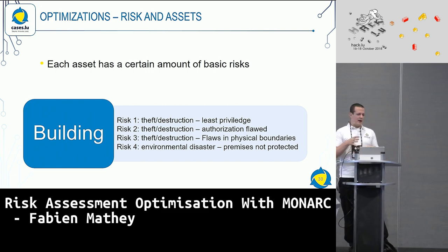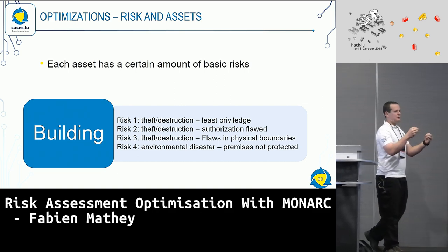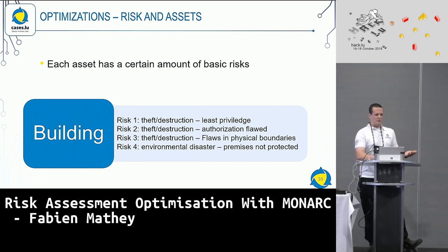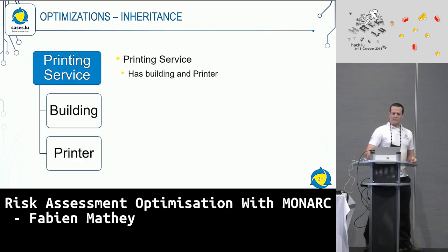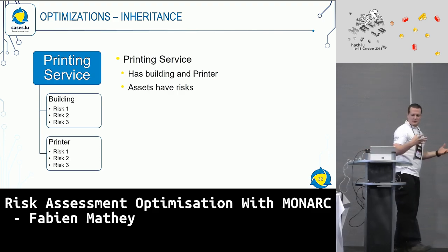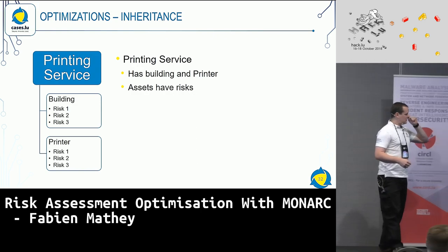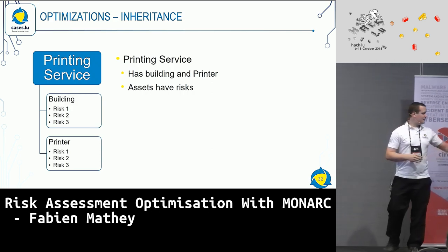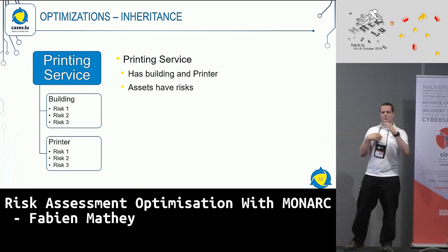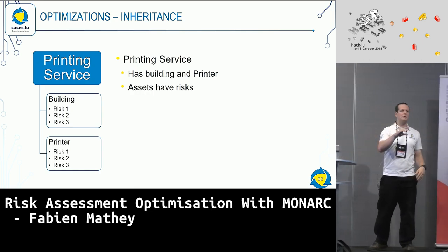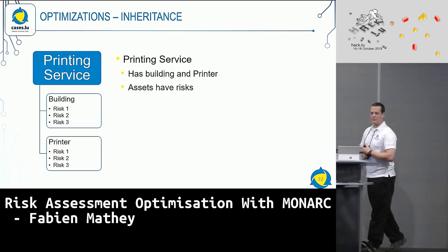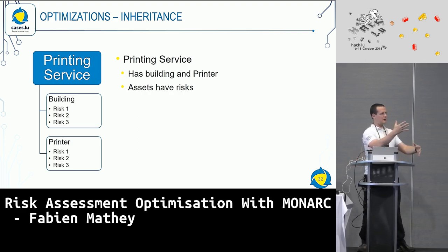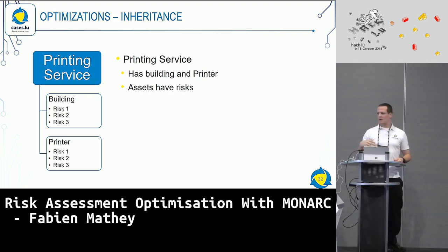These risks are the same for every company anywhere. They are higher or lower depending on where you are — flooding is not that important if you're high up with no water around. When we have each asset with some basic risks attached, we need less time afterwards for modeling. During risk identification, if we have our printing service with a building and a printer attached, and each of these have their risks, we only need to create the primary asset and drag and drop a building and a printer.